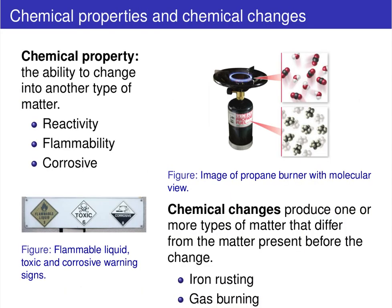Now, looking at chemical properties and chemical changes, we are looking at an alteration in the chemical identity of the compound. A chemical property describes the ability to change into another type of matter. Chemical reactivity — the propensity for a compound to form a different array of other compounds — is a chemical property. Flammability and the corrosive nature of a compound are also chemical properties. A chemical change is defined as a change that produces one or more types of matter that differ from the matter present before the change. The key word is differ.